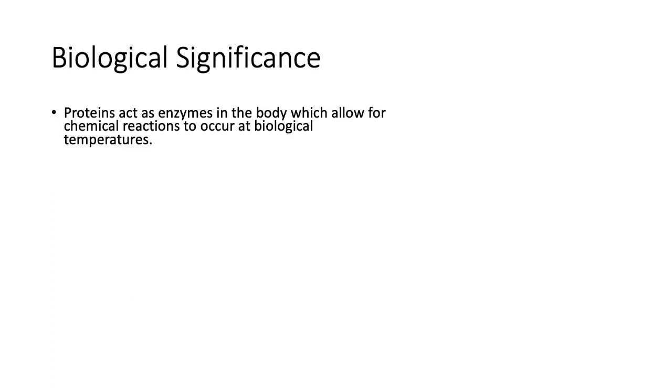So what's the biological significance? Proteins act as enzymes in the body which allow chemical reactions to occur at biological temperatures. Not only do these proteins build more DNA and proteins, they also control the flow of ions, make muscles move, and do all kinds of things. These proteins are really important.